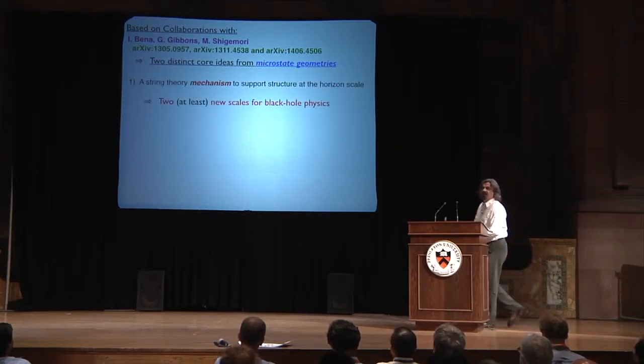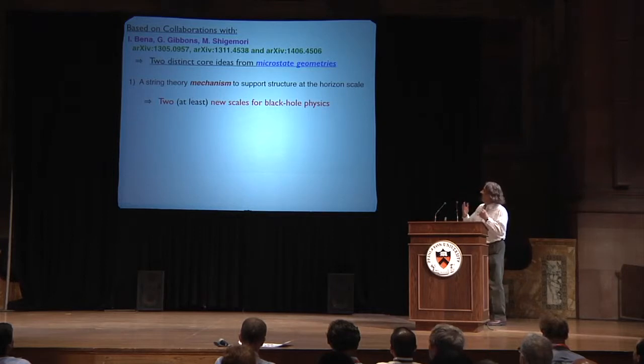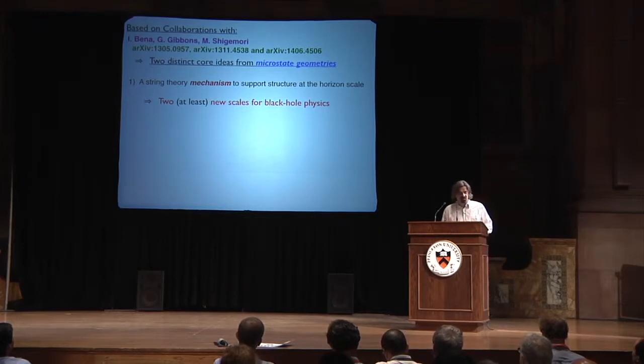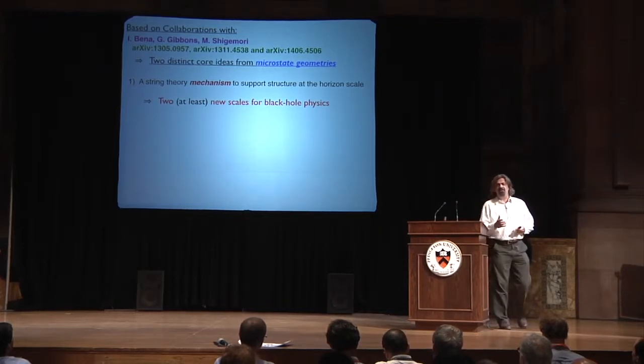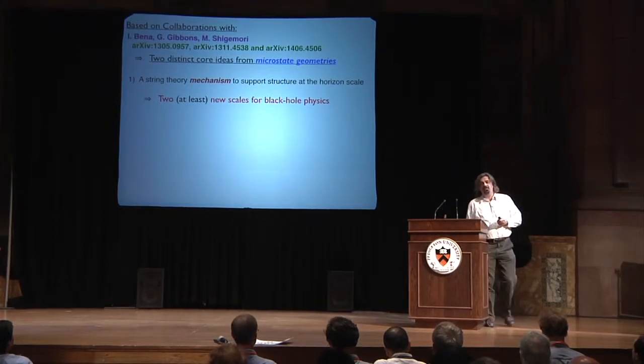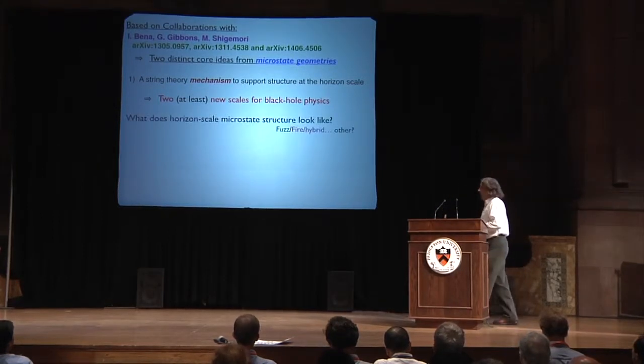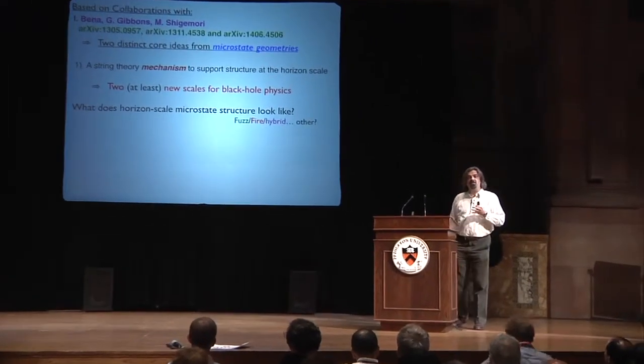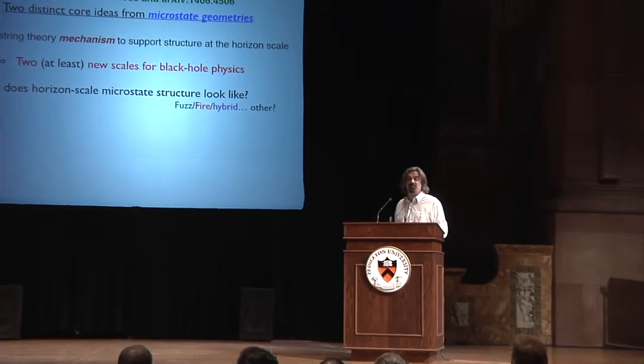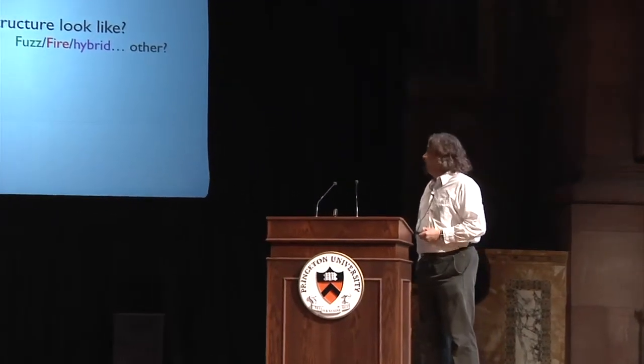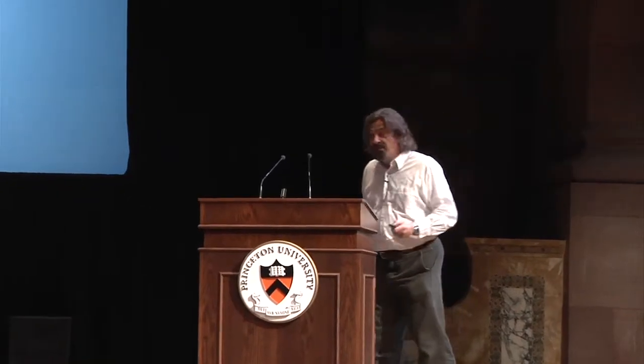The first of which is that from this whole study of microstate geometries, we have a string theory mechanism to support structure at the horizon scale. Once you get that mechanism, it suggests that there should be at least two new scales in nature to describe black hole physics. Once you've got the mechanism, you can then ask, what does the horizon scale microstate structure look like? Is it fuzzballs, firewalls, hybrids, or something else?